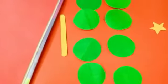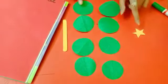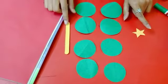So look here, for this craft we need 8 green circles, 1 star, and 1 ice cream stick.